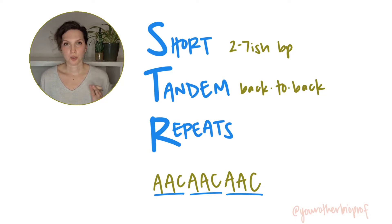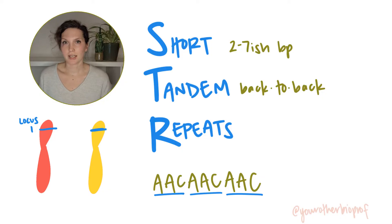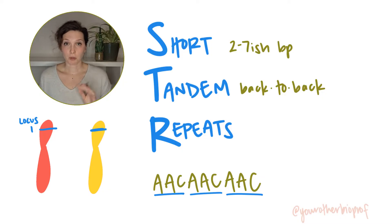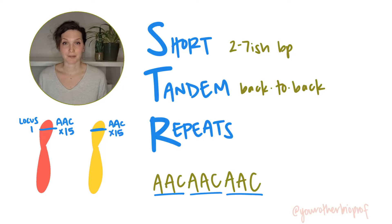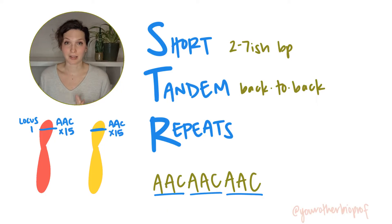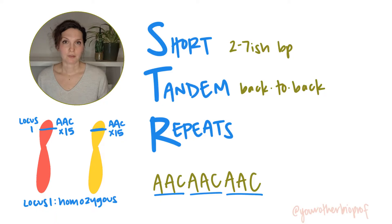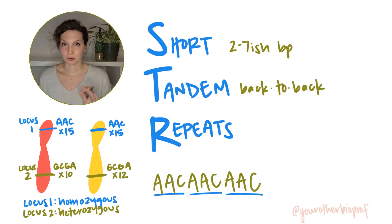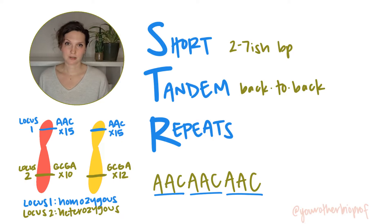Everybody has two copies of each STR locus, one inherited from each parent. If both copies have the same number of repeats, we'd say they have the same alleles and that locus is homozygous. If you have two different repeat numbers at the two different loci, you're heterozygous — two different alleles.